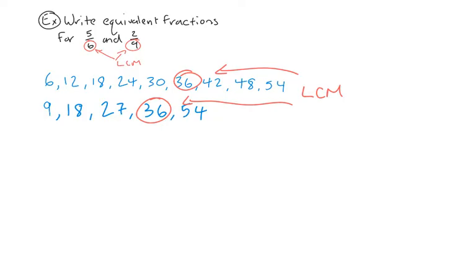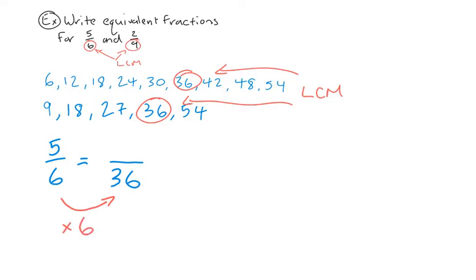We want to find equivalent fractions for 5 over 6 and 2 over 9, so let's start with 5 over 6. In our new fraction, the denominator is going to be the lowest common multiple of 6 and 9, which we figured out to be 36. To figure out the new numerator, ask yourself how did I get from 6 to 36? That would be multiplying by 6, since 6 times 6 is 36. What you do to the bottom you also have to do to the top, so we multiply the numerator by 6: 5 times 6 is 30.